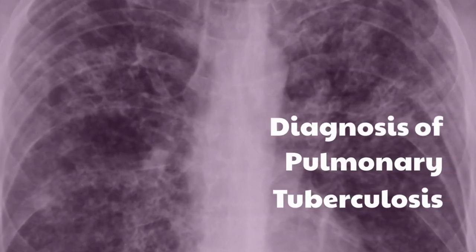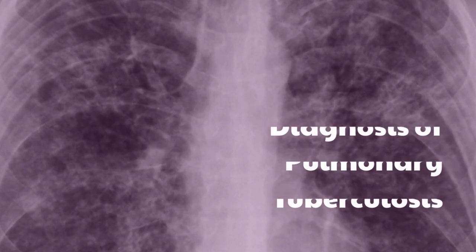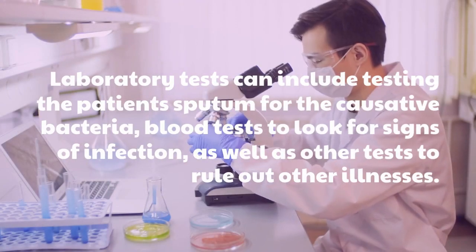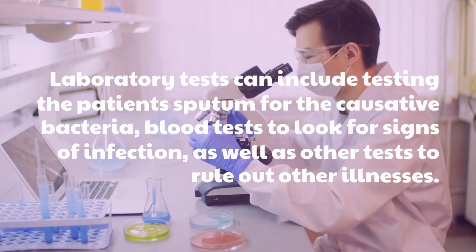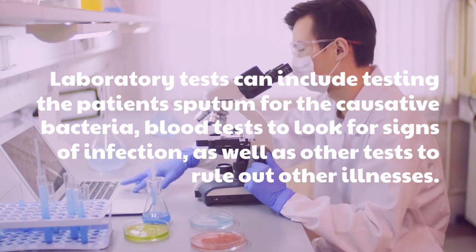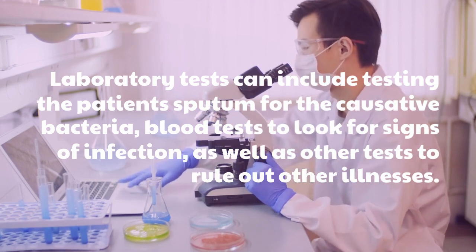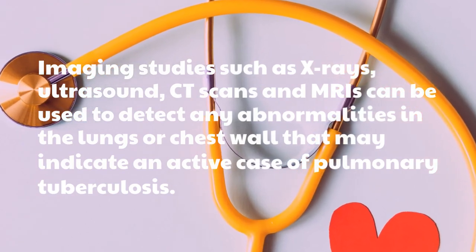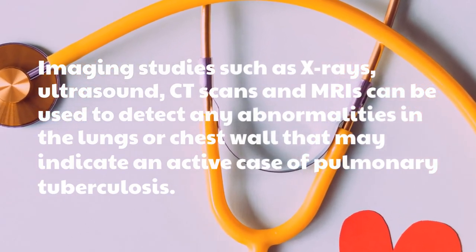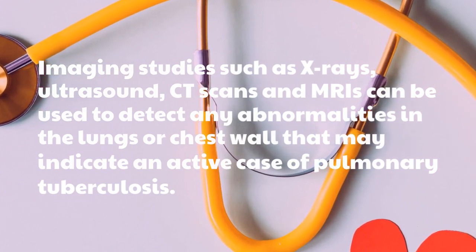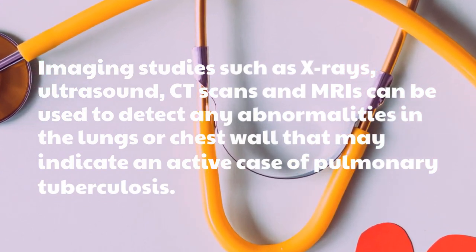Diagnosis of Pulmonary Tuberculosis: Laboratory tests can include testing the patient's sputum for the positive bacteria, blood tests to look for signs of infection, as well as other tests to rule out other illnesses. Imaging studies such as x-rays, ultrasound, CT scans can be used to detect any abnormalities in the lungs or chest wall that may indicate an active case of pulmonary tuberculosis.